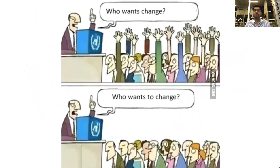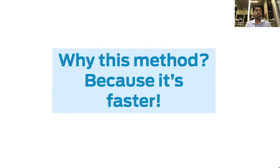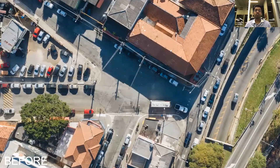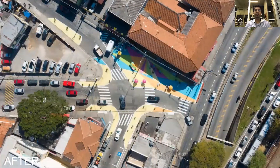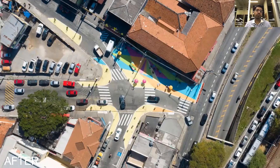Why are these interim projects so powerful? Because, just like this illustration shows, we often know that everyone wants to see change, but very few want to change themselves. Interim projects allow us to see quick change at a low cost and see what is possible, because it's faster. Like this project in Sao Paulo showing how this entire intersection was made extremely safe for all road users — with narrowing the lane widths, directing traffic, adding more direct and shorter pedestrian crosswalks, and a few traffic calming measures.